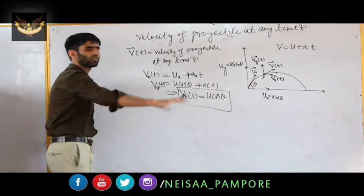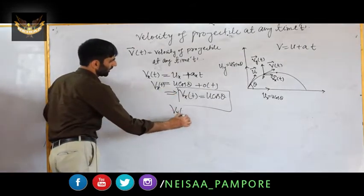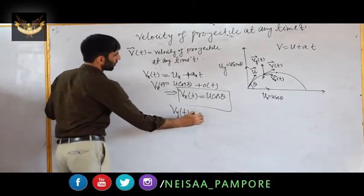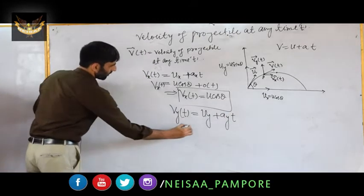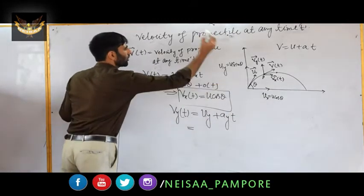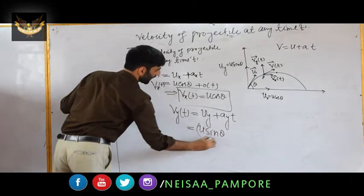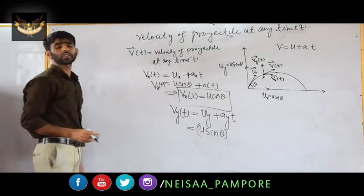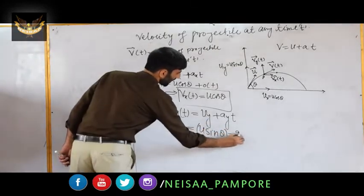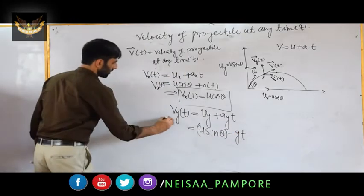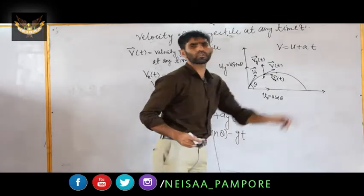Using the kinematic equation v = u + at: v_x(t) = u_x + a_x·t = u cos θ + 0·t = u cos θ, since acceleration in the horizontal direction is zero. So v_x(t) = u cos θ is constant throughout the motion.